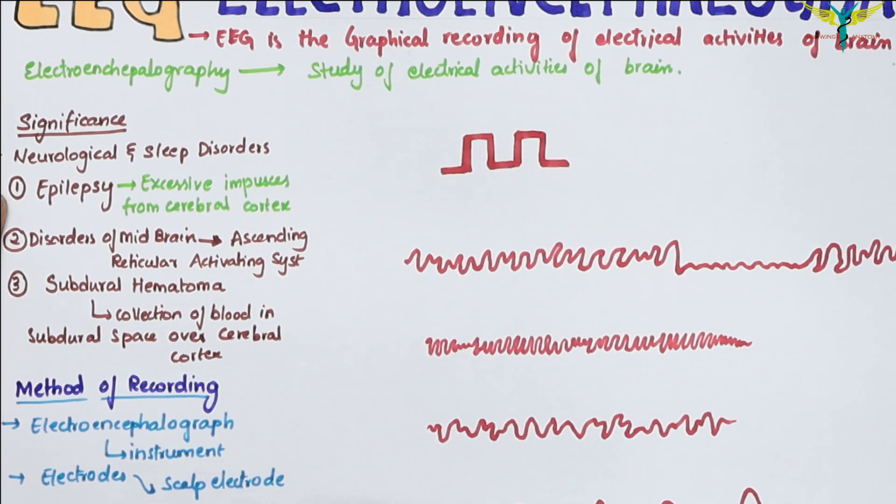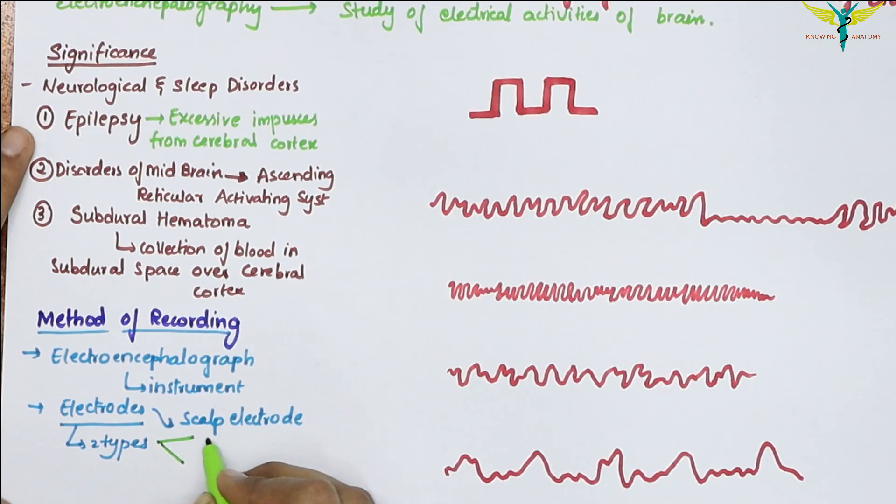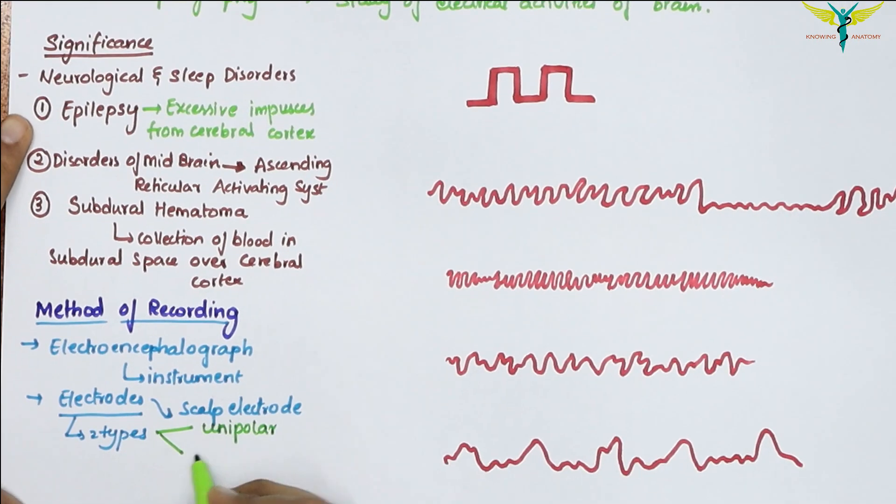These electrodes are of two types: unipolar and bipolar. While using the bipolar electrodes, both terminals are placed in different parts of the brain. While using the unipolar, the active electrode is placed over the cortex and the indifferent electrode is kept in some part of the body away from the cortex.